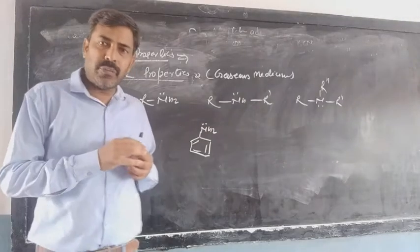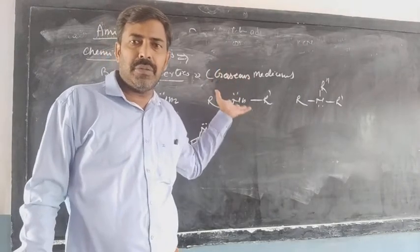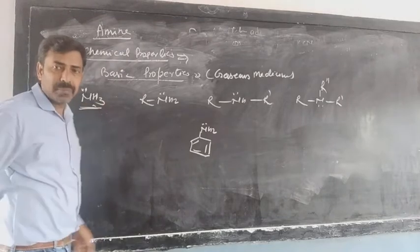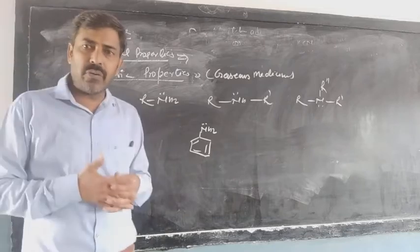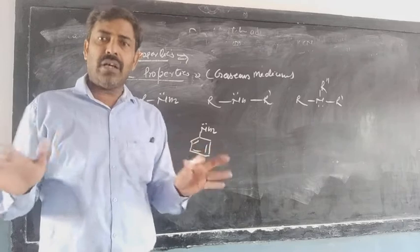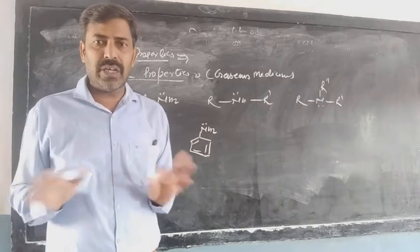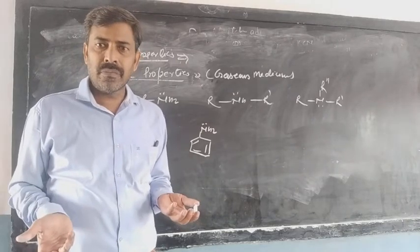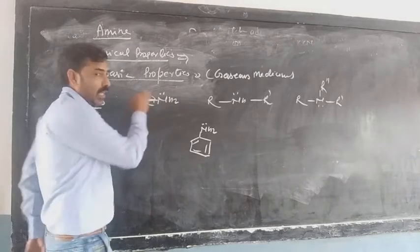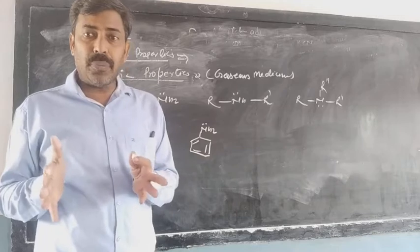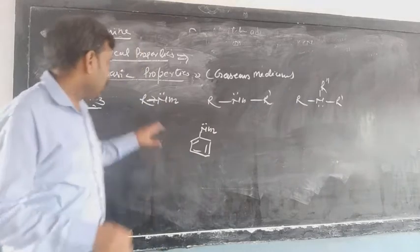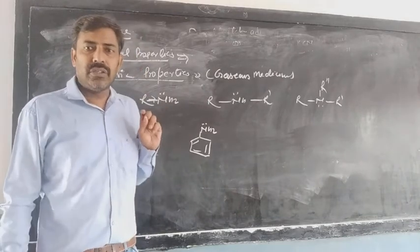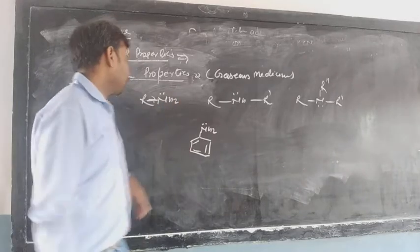We are going to see the basic strength of amines under gaseous medium. Under gaseous medium, the system behaves like an electron donor. The reference is ammonia - when only hydrogens are there with the nitrogen, there is no electron donating and no electron accepting group. So there is no minus I effect, no plus I effect, and whatever the electron density is there on the nitrogen, that will remain the same. But when you see the primary amine, there is an alkyl group, and the alkyl group is considered an electron donating group that generates the +I effect. Because of the +I effect, the electron density on the nitrogen will increase, which is the reason for the basic strength. So the primary amine is more basic than ammonia.